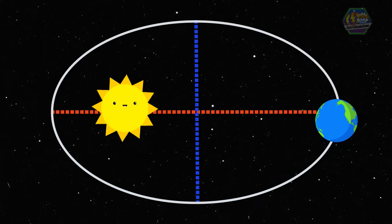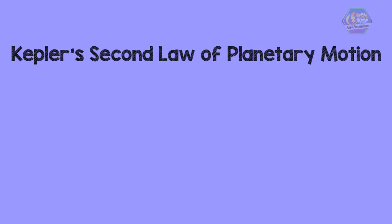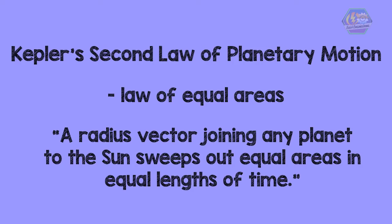Now let us move on to the second law. Kepler's second law of planetary motion, sometimes referred to as the law of equal areas, can be stated as: a radius vector joining the planet to the Sun sweeps out equal areas in equal lengths of time. The second law describes the speed at which any given planet will move while orbiting the Sun.